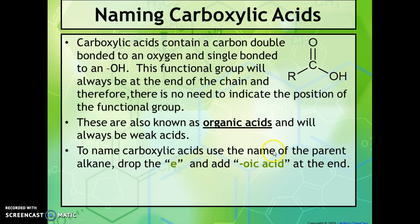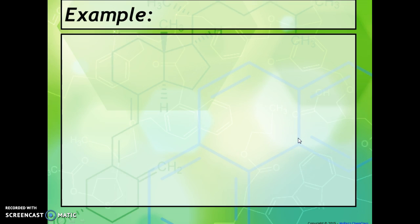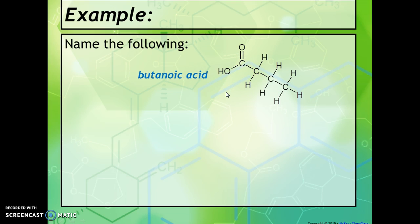So here's an example. We have this carboxylic acid group on the end that tells us it needs to end in 'oic acid', and it's got a chain that's four long. So that four tells me it would normally be butane, but I'm going to change my ending so it turns into butanoic acid.